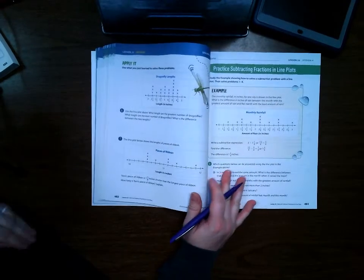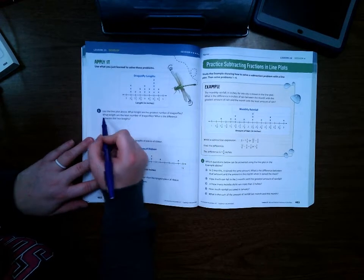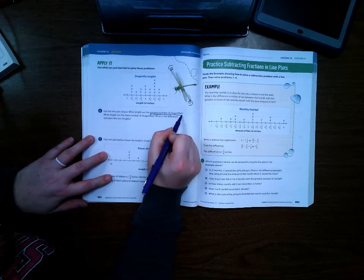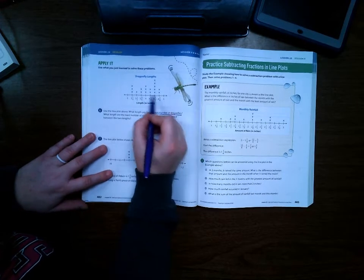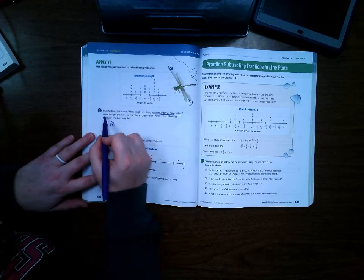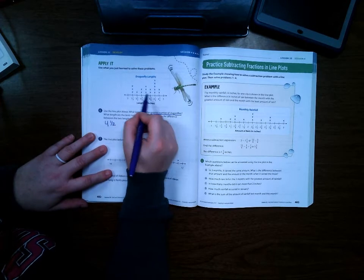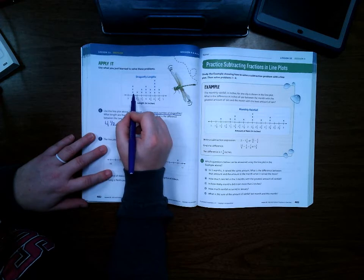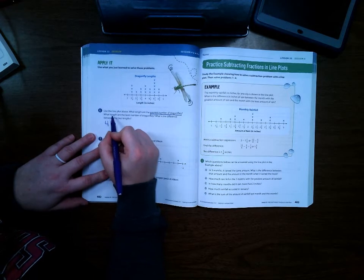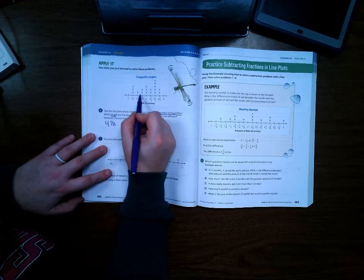On page 482, we're still working with that same problem, but it's going to be a little bit different questions. Use the line plot above. What length are the greatest number of dragonflies? That means we're going to find the number that has the most x's, which is 4 and 1/2. What length are the least number of dragonflies? That means the one that there's only one of. The least number is 1, and it's on 3 and 1/2.